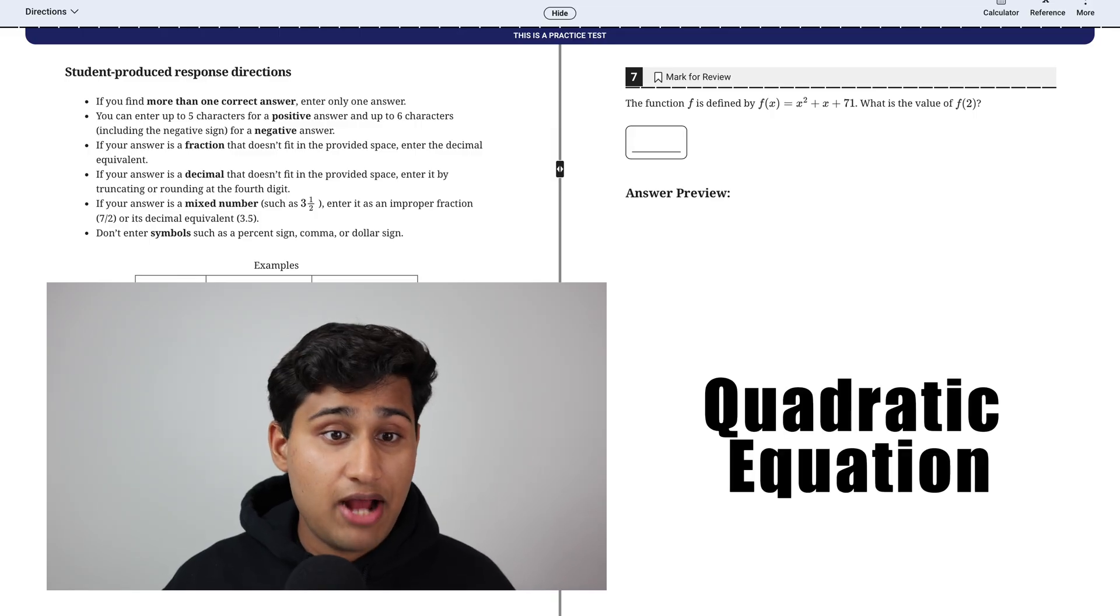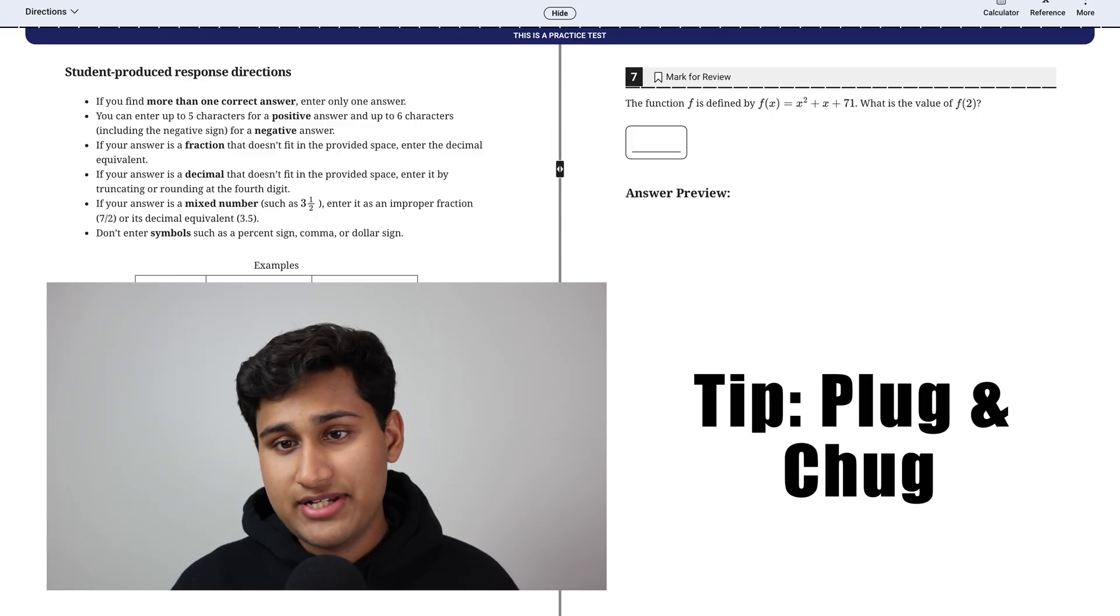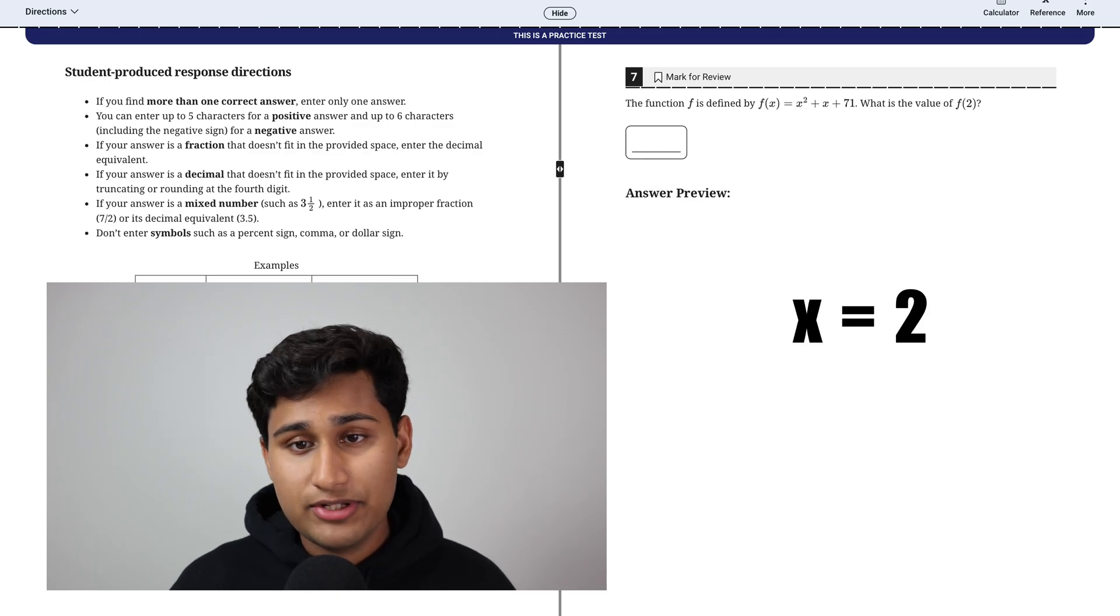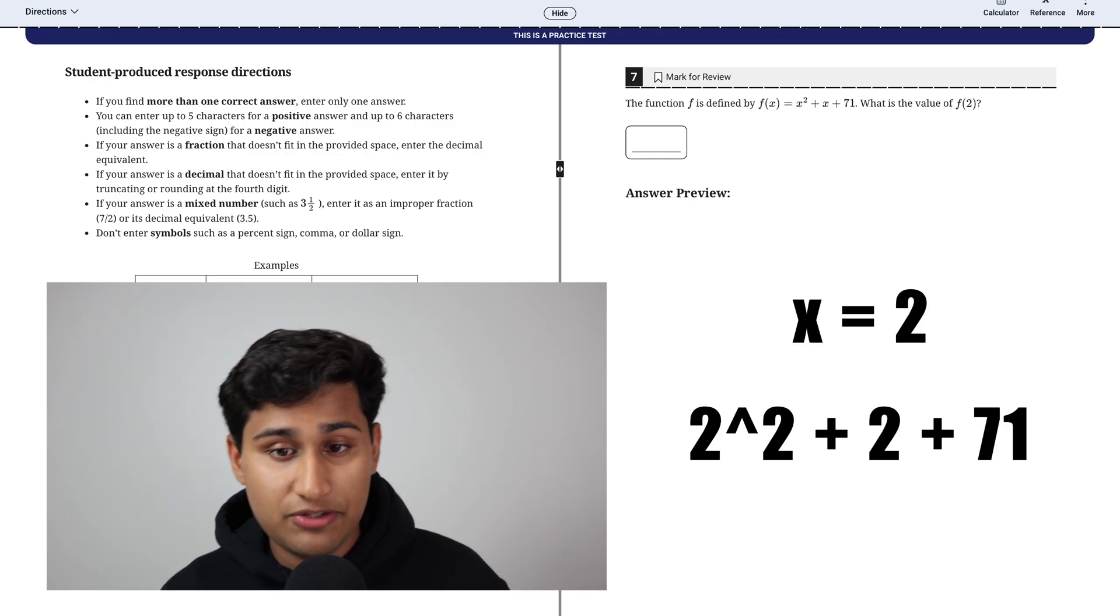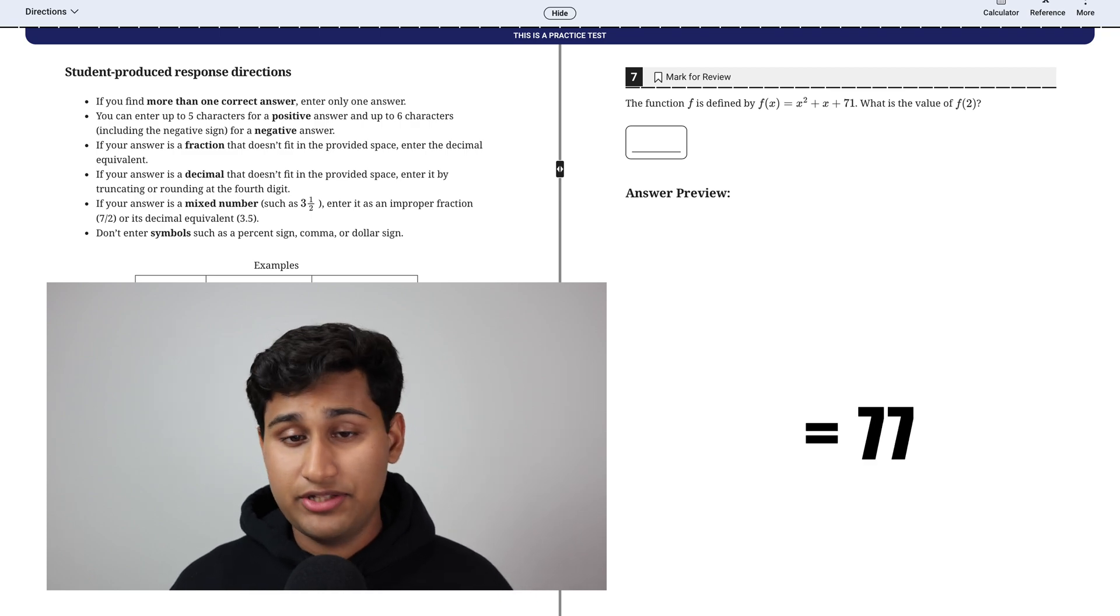So our next type of question is a quadratic equation. And the best thing you can do for these is just plug and chug. So here they're telling you F of two, which means X equals two. So literally just plug in two squared plus two plus 71, which is four plus two plus 71, which is 77. So your answer is 77.